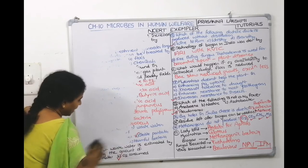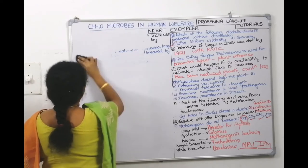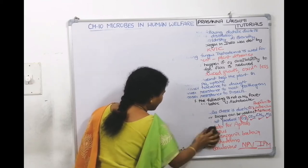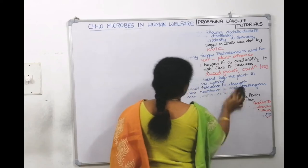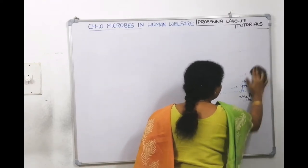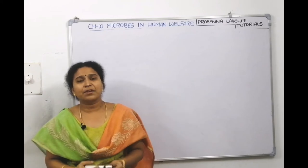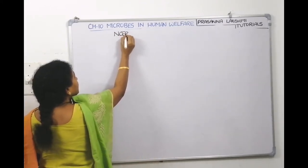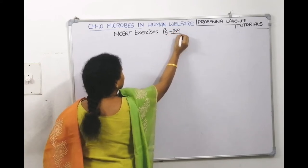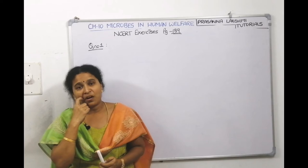Now we will discuss the NCERT exercise questions from page 189 of the NCERT textbook. These are descriptive questions. Let's go through them one by one to make our concepts even clearer so that whatever corner they ask from, we know the answer.